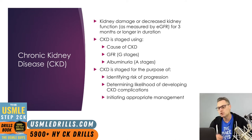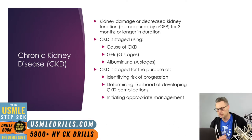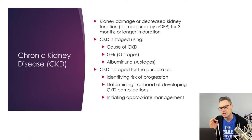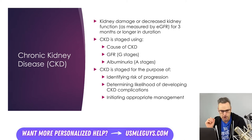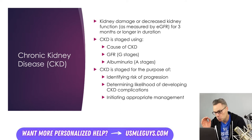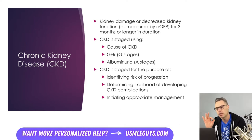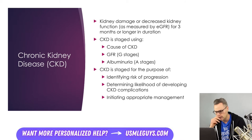Kidney damage can be established by histology from kidney biopsy or from imaging studies, and damage can be inferred from increases in urine albumin excretion. Kidney function can be measured with GFR. After identifying a patient with kidney damage or decreased function lasting three months or longer, the next step is staging the degree of CKD.